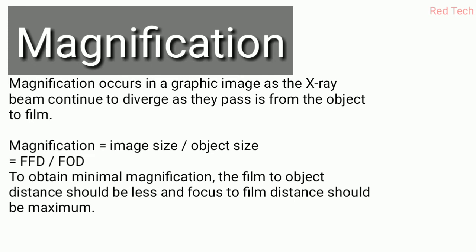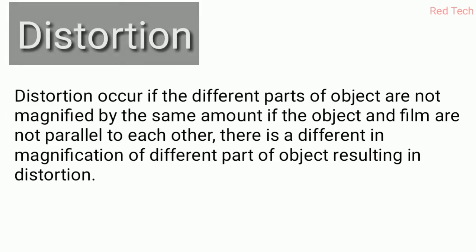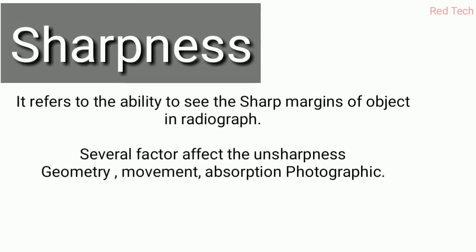Magnification of any object in the image should be equal in all directions; otherwise it creates unsharpness. Distortion occurs when different parts of the object are not magnified by the same amount. Distortion basically happens when the object and the film are not parallel to each other, resulting in differences in magnification of different parts of the object. Unbalanced magnification can also create distortion in the image.